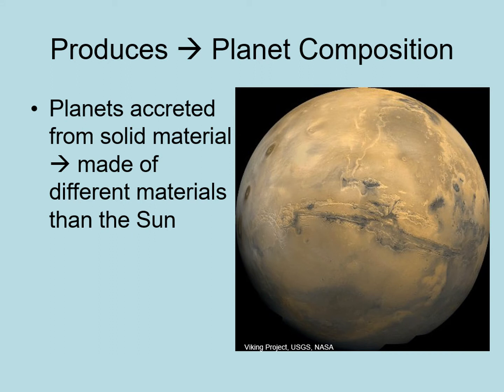Pure hydrogen and helium don't form solids, so they don't count. Instead, just those rarer rocks, metals, and hydrogen compounds go into building planets at this stage, so these are the materials that we see in the planets. You should be asking: what about the giant planets? How do they get their hydrogen and helium if they form from solid body accretion? In fact, they're going to need another step called gas accretion.